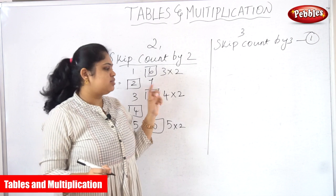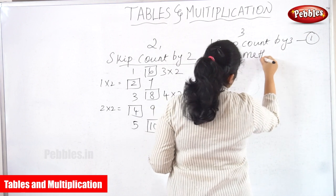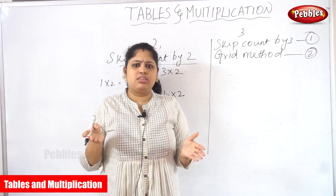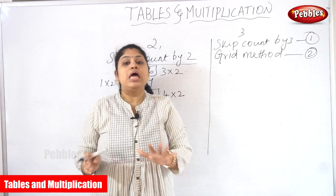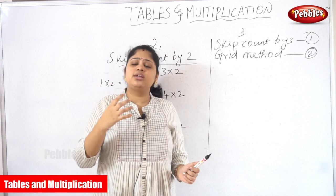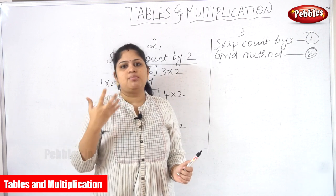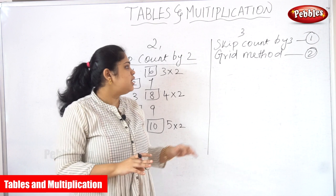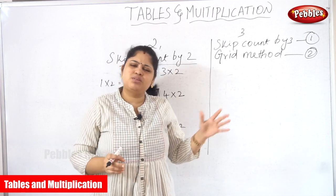In the second method I have told you about the grid method. So there are only two methods: the grid method and the skip counting method to learn the tables. Of course, there are different countries where different methods are used — like the Chinese use the abacus, Japanese and Russians use different kinds of methods. But this Indian method is more than enough for small tables like two and three.